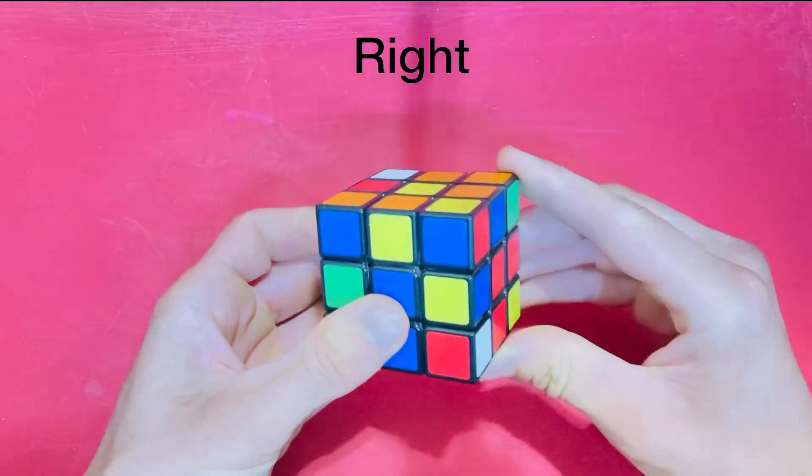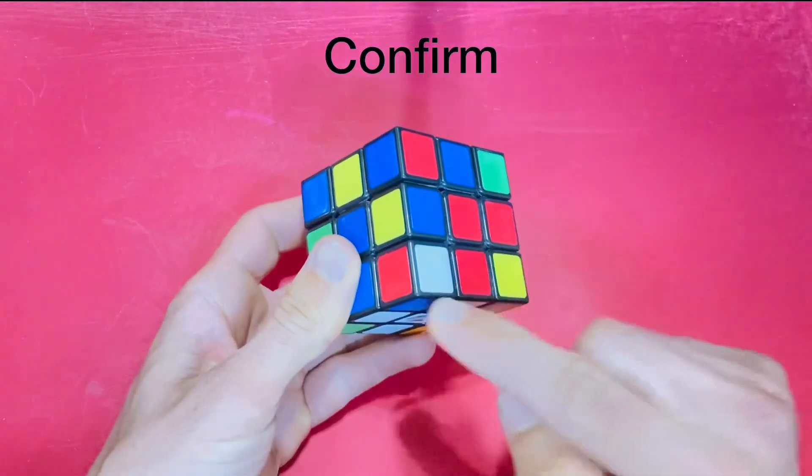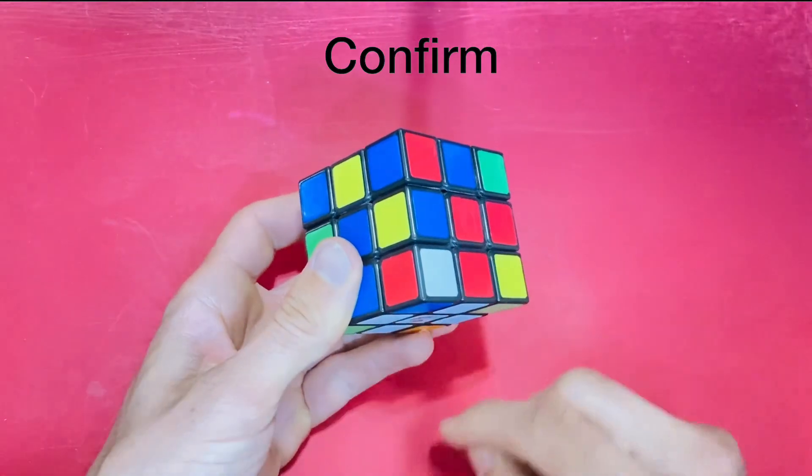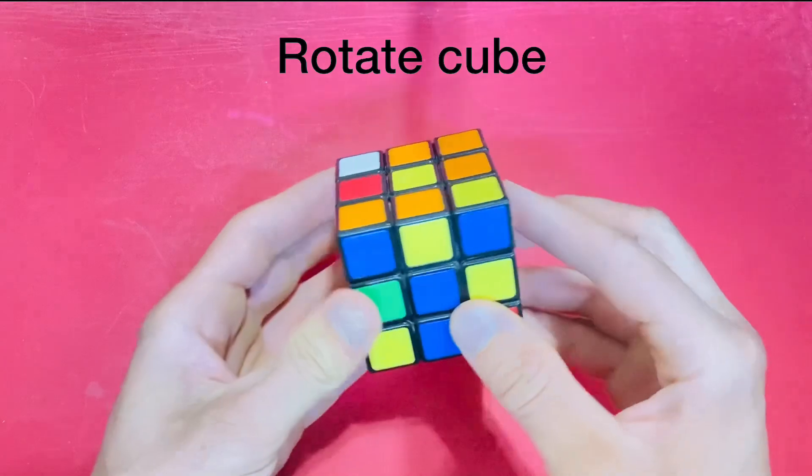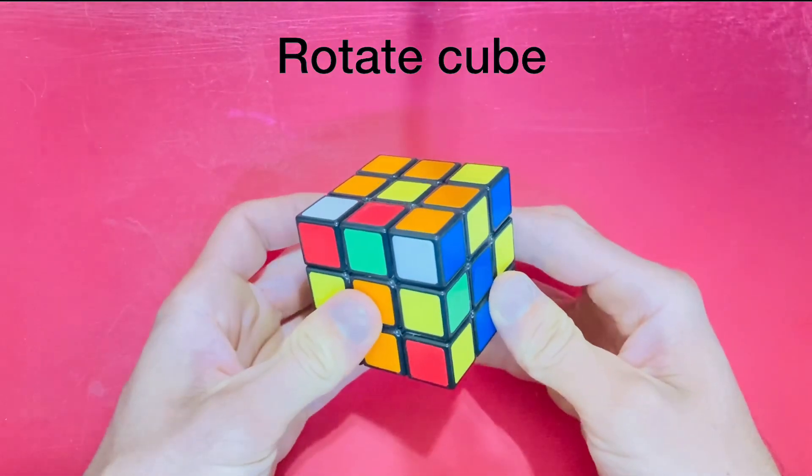Just like the last video. Now look down and confirm that it is in the right location. It looks like it is. Now rotate the entire cube and move on to the next corner.